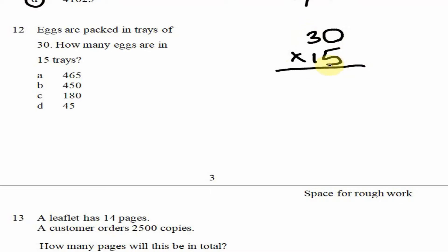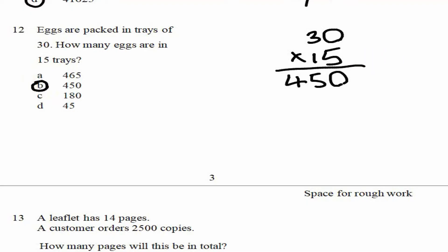15 times 0 is 0, and 15 times 3 is 45. So our answer is 450.